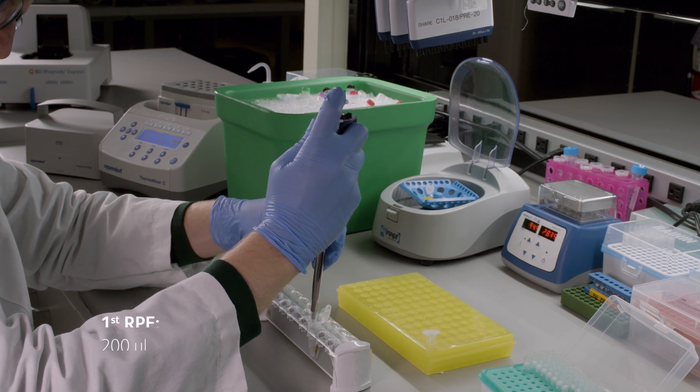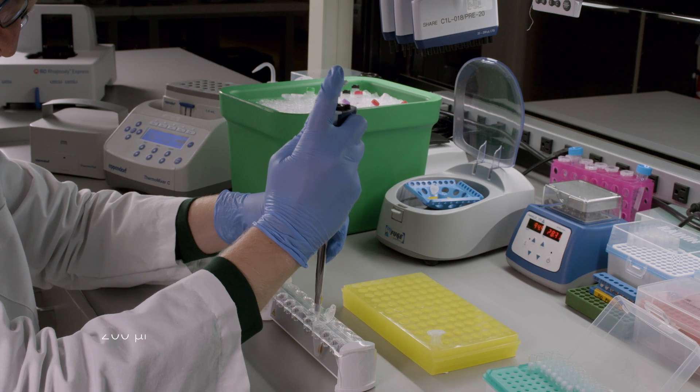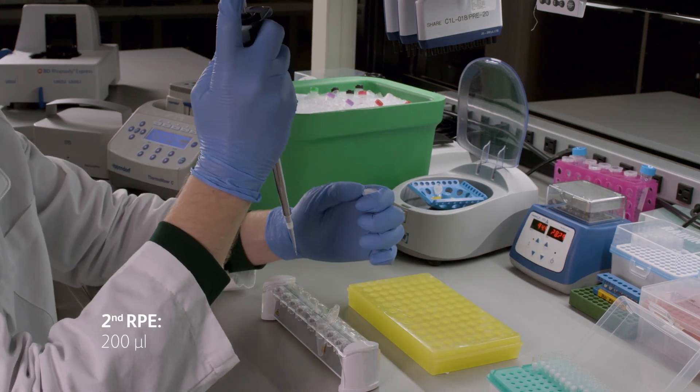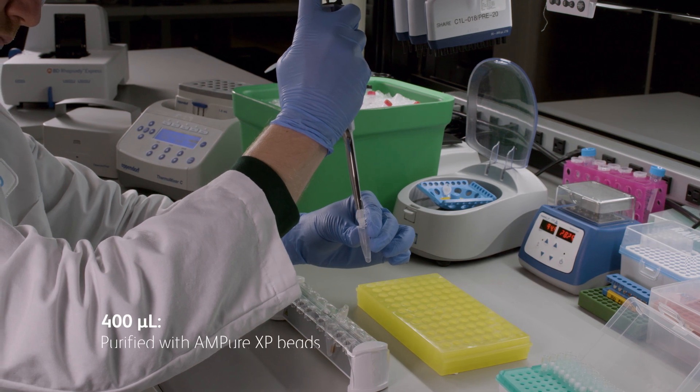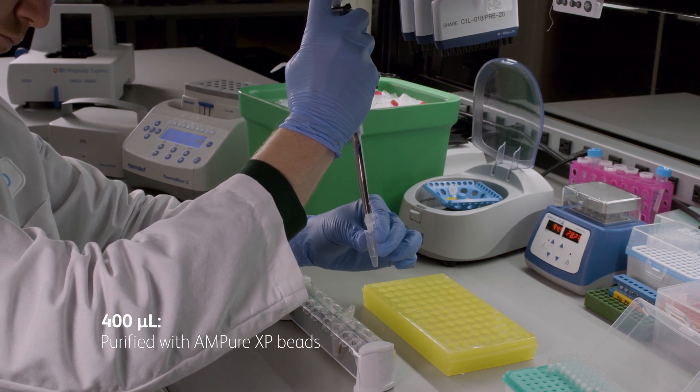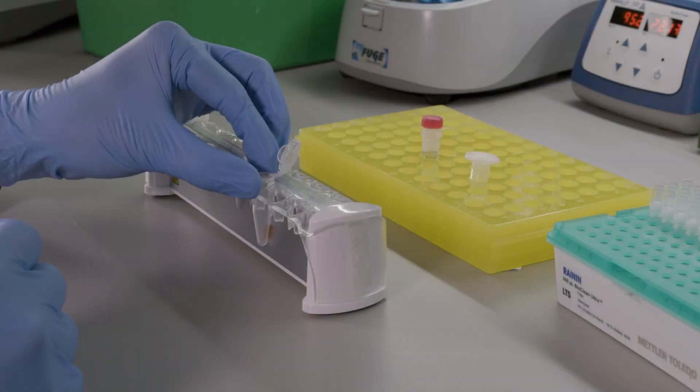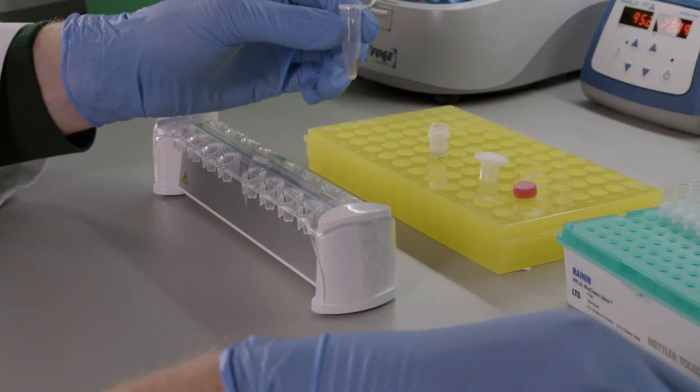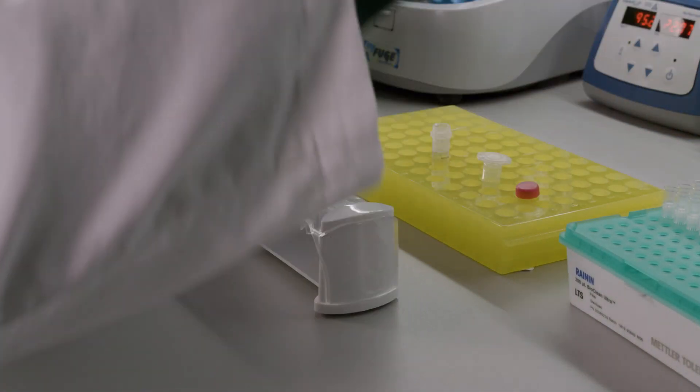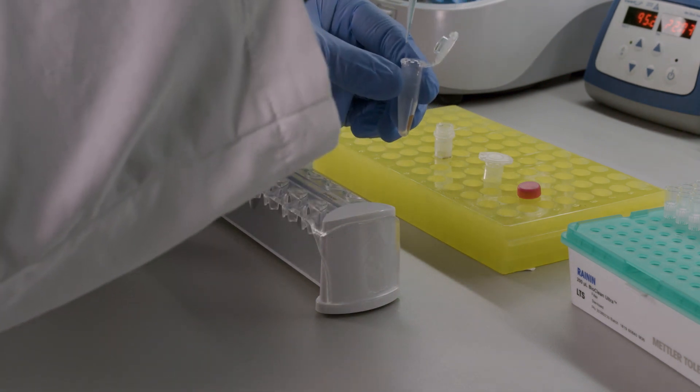Remove the tube containing the beads from the magnet and perform an additional RPE reaction identical to the first. The products from each RPE reaction will be combined for a total volume of 400 microliters and purified with AMPure XP beads. The beads remaining after collecting the RPE products from the second RPE reaction can be resuspended in cooled bead resuspension buffer and stored at 4 degrees Celsius for up to 3 months.